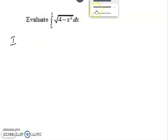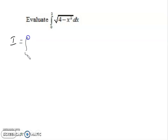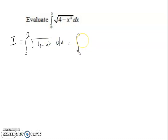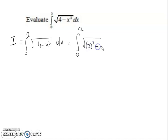The question is: I = ∫₀² √(4 - x²) dx. We can rewrite 4 as 2², so the expression becomes ∫₀² √(2² - x²) dx.